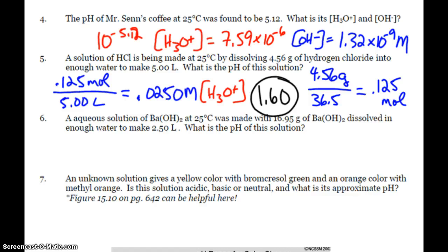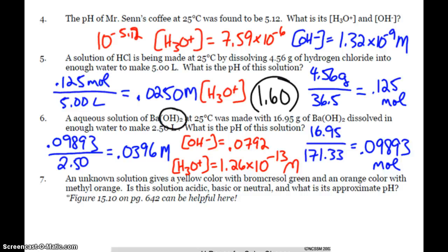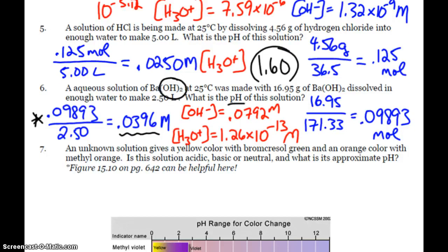Same process here with barium hydroxide. We just have to remember that barium hydroxide has two hydroxides. So I have 16.95 grams of barium hydroxide — molar mass near 171 — giving 0.09893 moles. I divide that by 2.5 liters for the molarity of barium hydroxide, but then I double it to get the hydroxide concentration: 0.0792 molar. Dividing the ion product constant by that gives a hydronium concentration of 1.26 times 10 to the negative 13, and so the pH is 12.9.